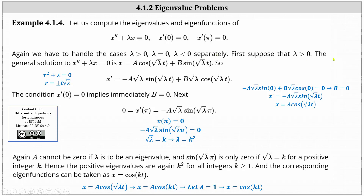First, suppose lambda is greater than 0. Then the general solution to x double prime plus lambda x equals 0 is x equals a cosine of square root lambda t plus b sine square root lambda t. This is because the corresponding characteristic equation is r squared plus lambda equals 0, where lambda is greater than 0, and therefore the characteristic equation has two complex solutions, plus or minus i square root lambda. So this is why the general solution is in the given form.